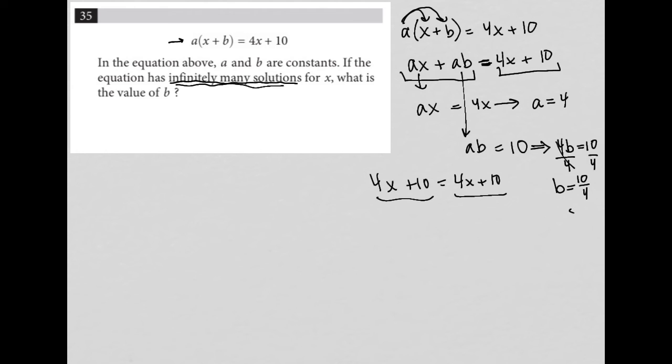10 over 4 can be reduced to 5 over 2. And of course, you could rewrite that as a decimal, which would be 2.5.